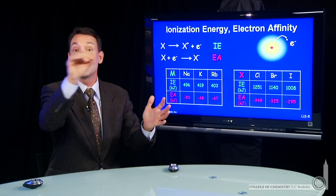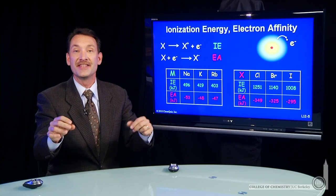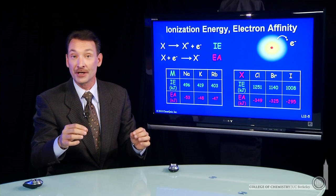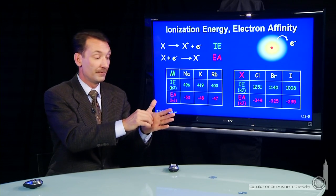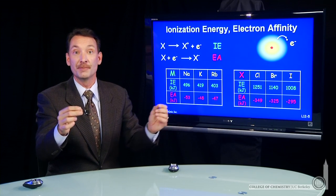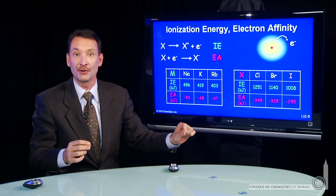So we have the ionization of sodium and the electron affinity of chlorine involved. That is, pulling off an electron from sodium and adding an electron to chlorine.